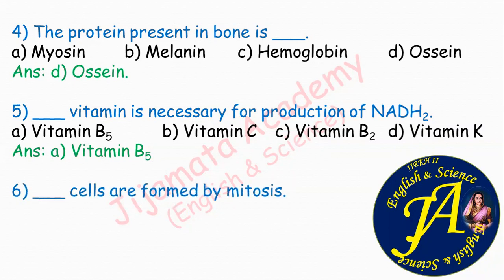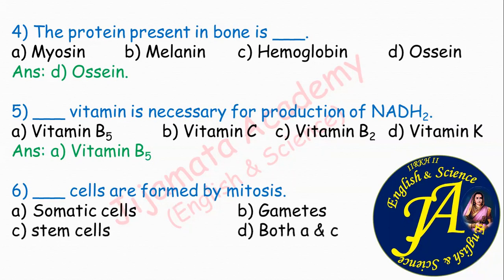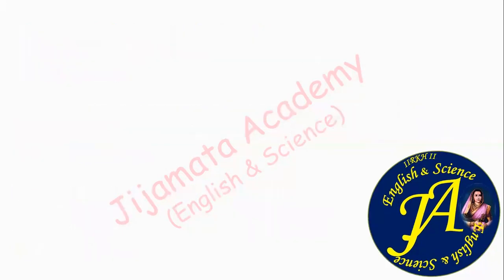Sixth question: dash cells are formed by mitosis. Options are somatic cells, gametes, stem cells, both A and C. The correct answer is option D, both A and C — somatic cells and stem cells are formed by mitosis, while gametes are formed by meiosis.